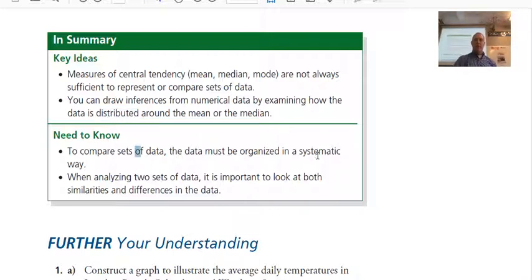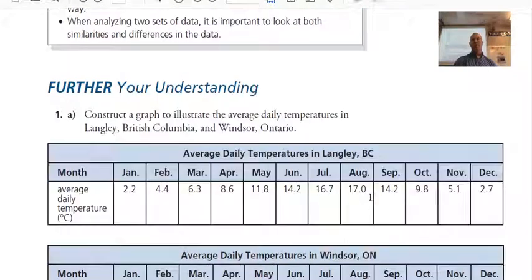So, to compare sets of data, the data must be organized in a systematic way, the median and the mode. You should organize the data from smallest to greatest, so you can see the middle number, and it's easier if you're doing it that way, you can see the mode because they will be listed right beside each other and it's easier to see. I didn't show that on the screen, but that is something that you should do for your data points to make sure you get this stuff right. When analyzing two sets of data, it's important to look at both similarities and differences in the data. So, there's your 5.1, an introduction to exploring differences in data.